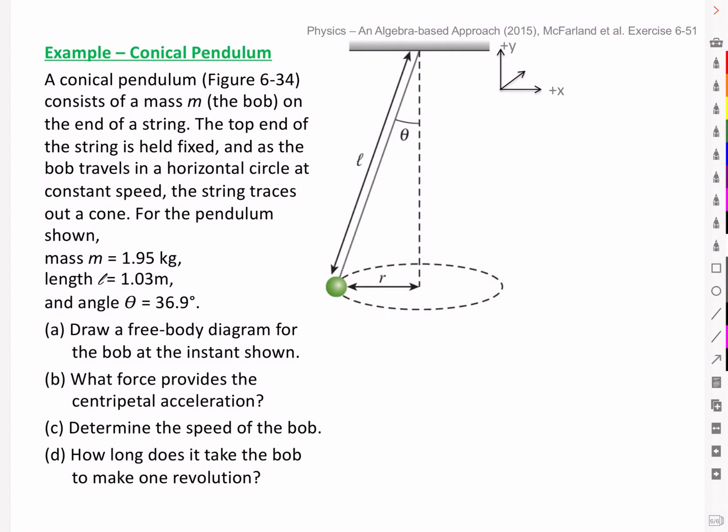Here's an example of uniform circular motion where we'll look at the net force causing that radial acceleration. We've got a conical pendulum shown here in the figure, which consists of a mass, the bob, on the end of a string. The top end of the string is held fixed, and as the bob travels in a horizontal circle at constant speed, the string traces out a cone.